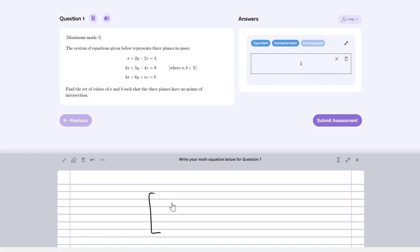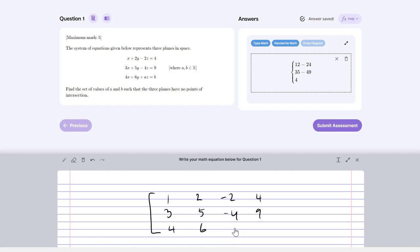If I type in my first row which would be 1, 2, -2, 4, and my second row which is 3, 5, -4, 9, and my third row which is 4, 6, a, b.